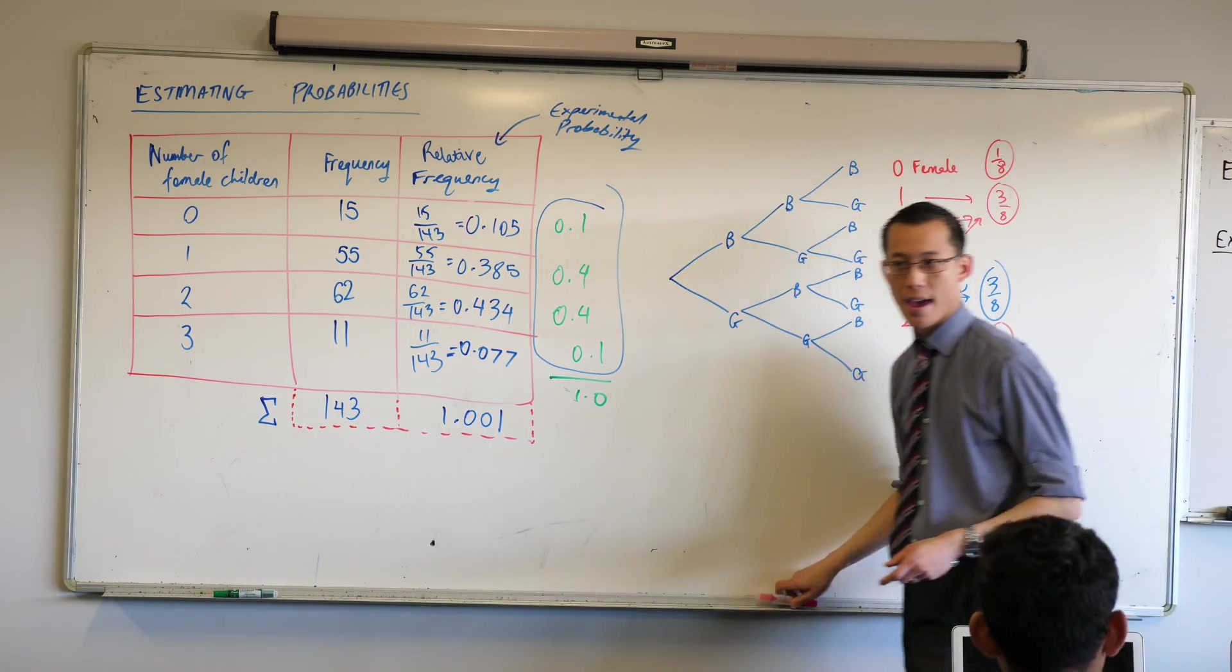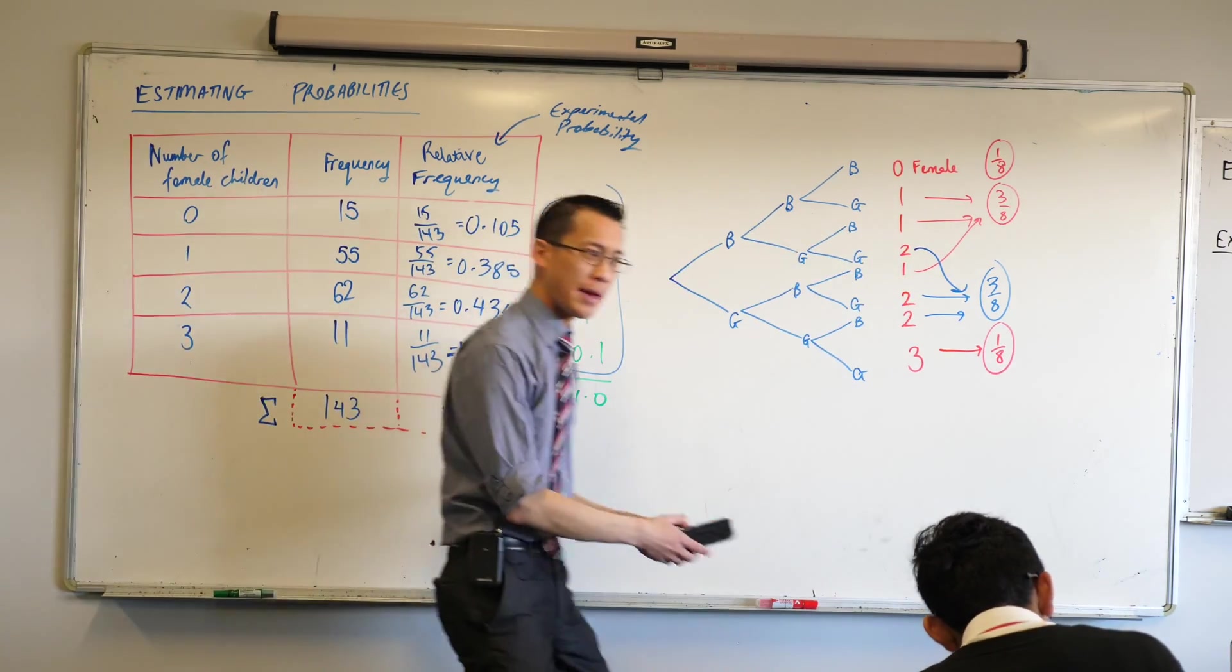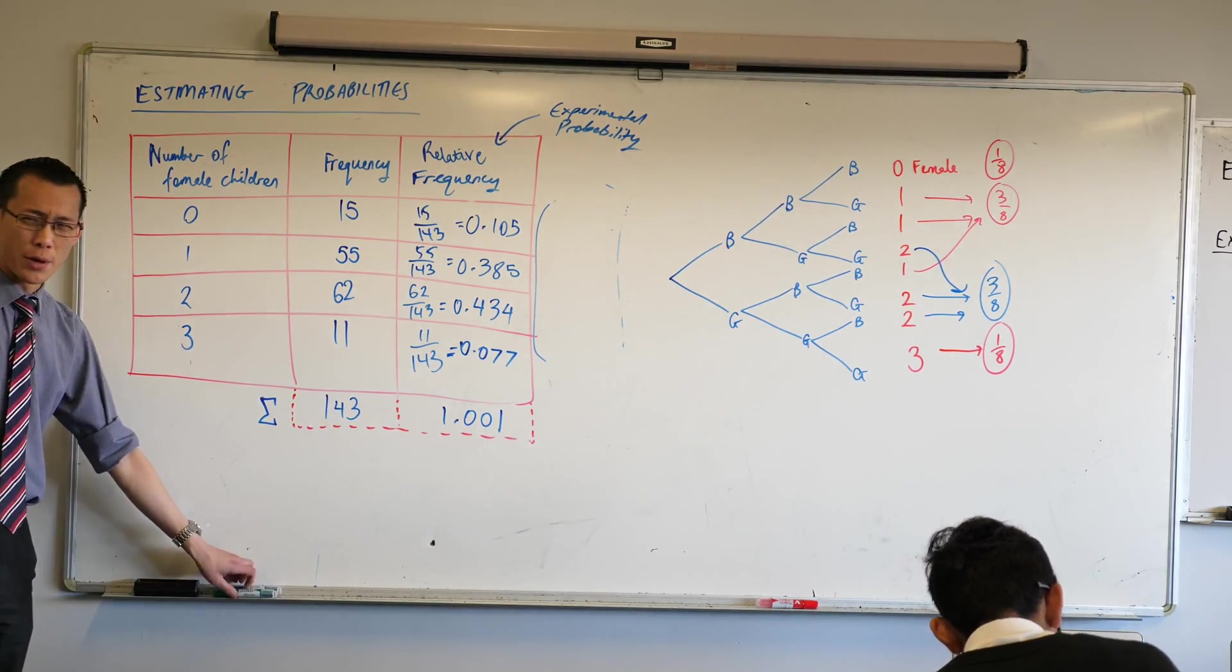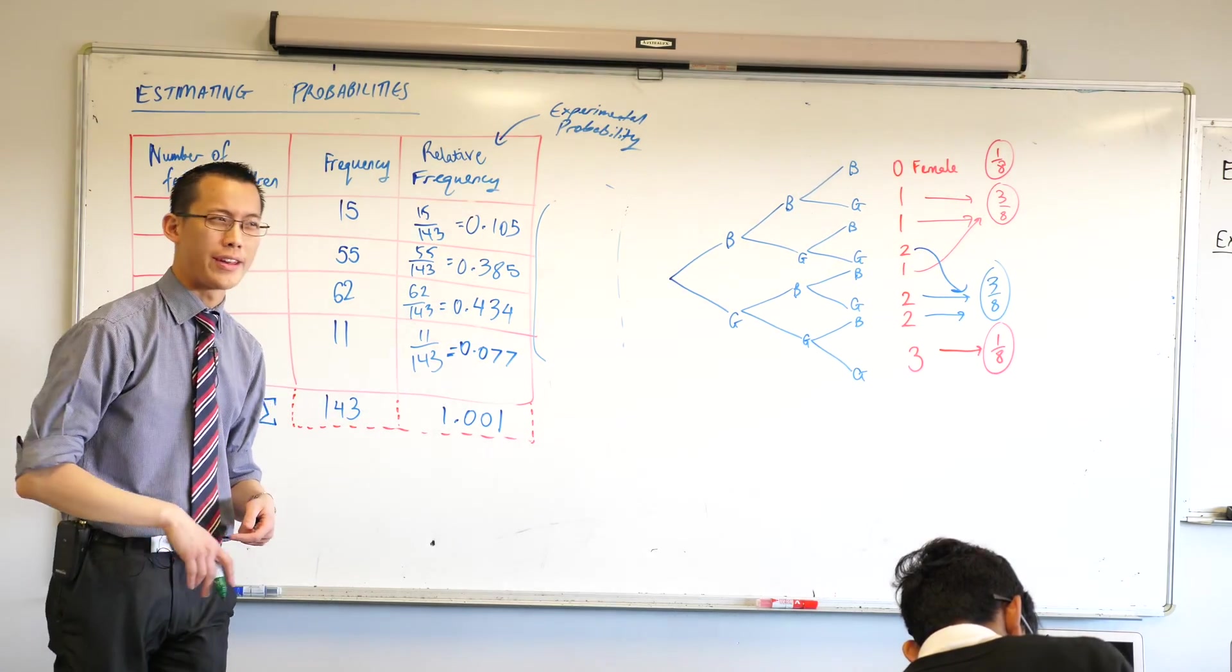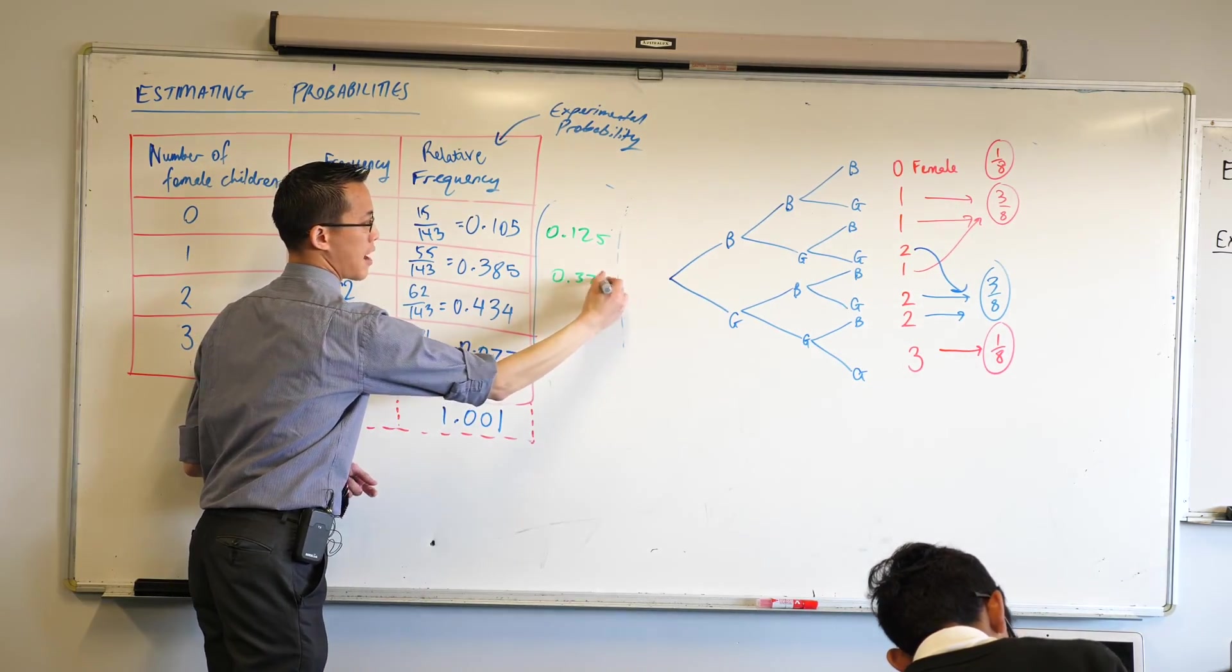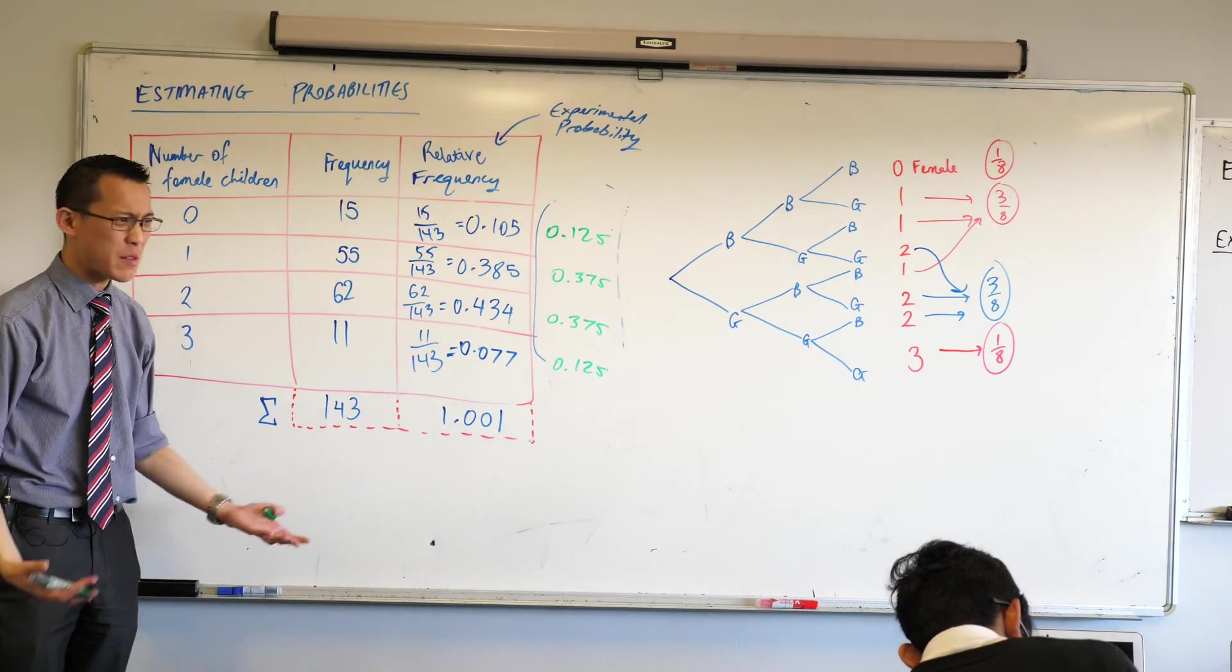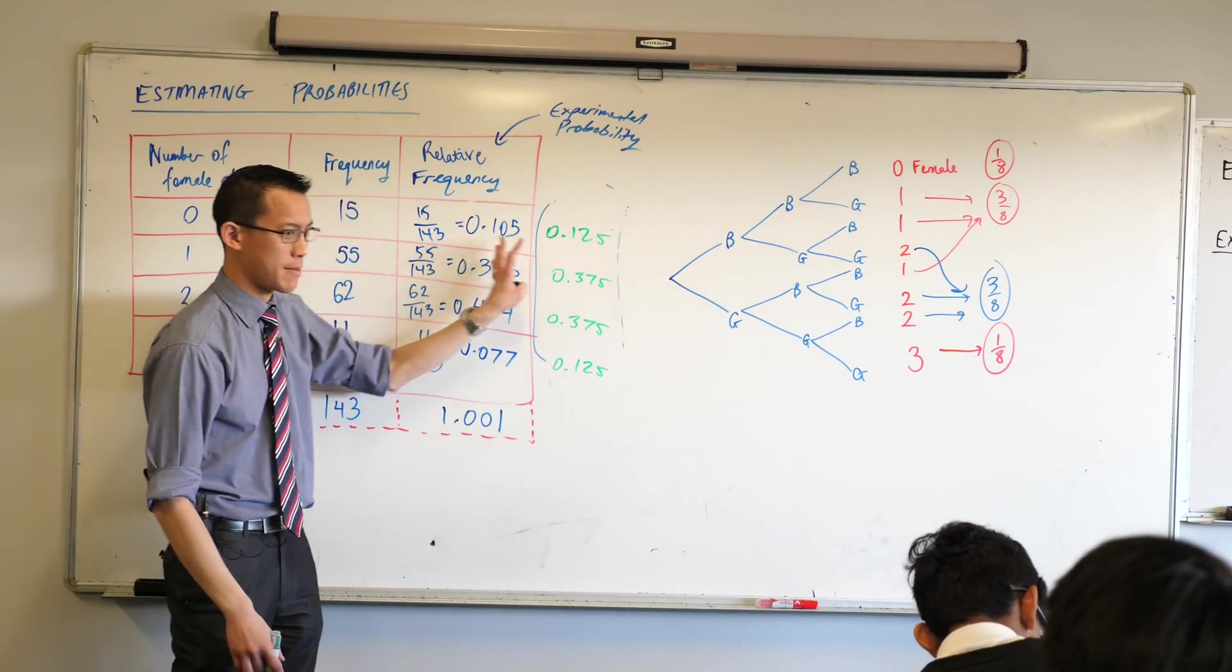So how does that compare to what actually happened? How did that compare to our actual probabilities? Are they within a reasonable range? Maybe help us to get these in decimal form so we can compare them. Does anyone know what an eighth is in decimal? Zero point one, two, five. Zero point three, seven, five. Zero point three, seven, five. Zero point one, two, five. Does it fit within what we actually expected? It's pretty reasonable, right? It's not far off. So I'm pretty happy with our experiment mostly matching reality.